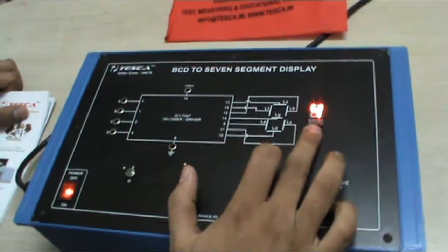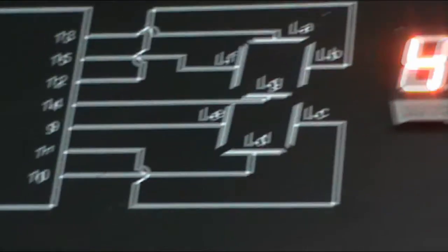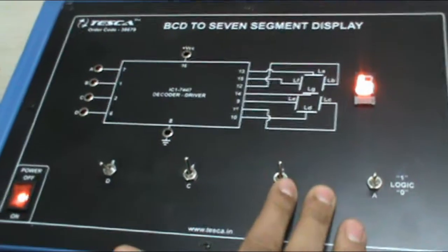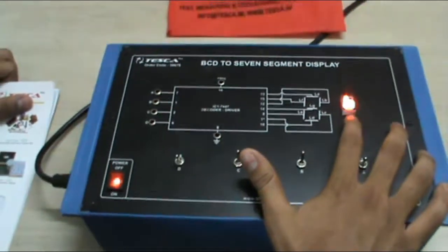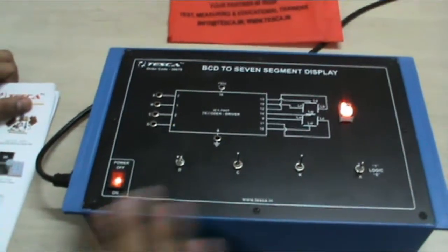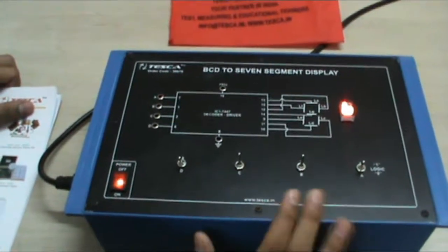Similarly we can see 4. If we give inputs C and B both as 1, so 4 plus 2 is 6. We can see 6 on the 7 segment display. This is the working of BCD to 7 segment display.